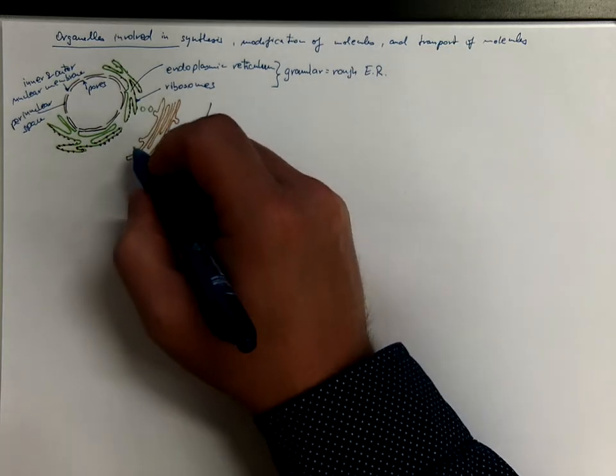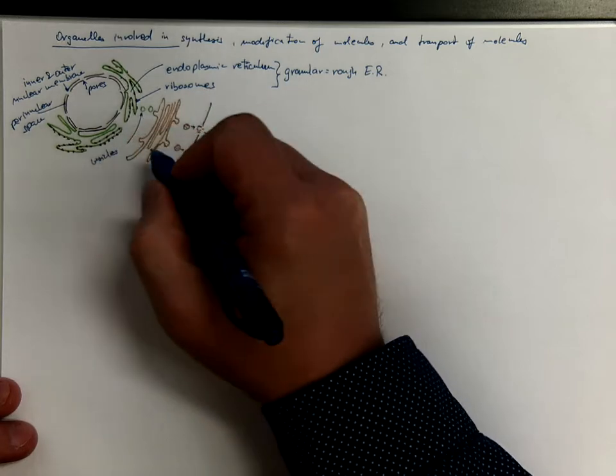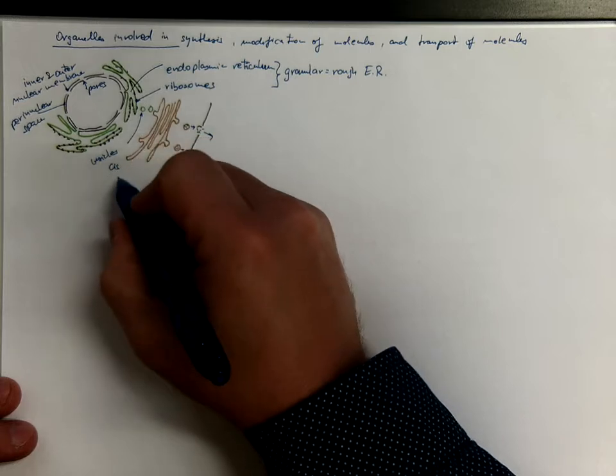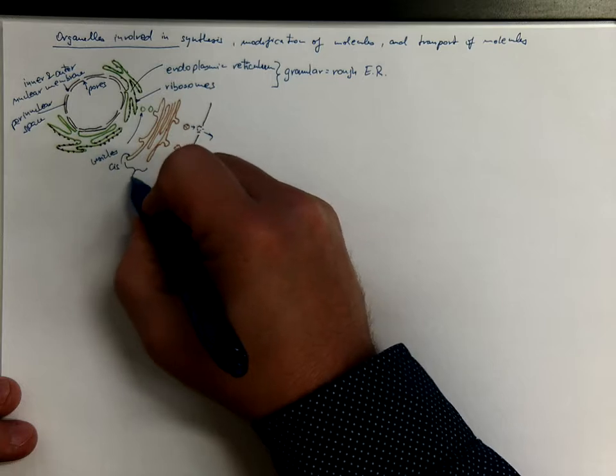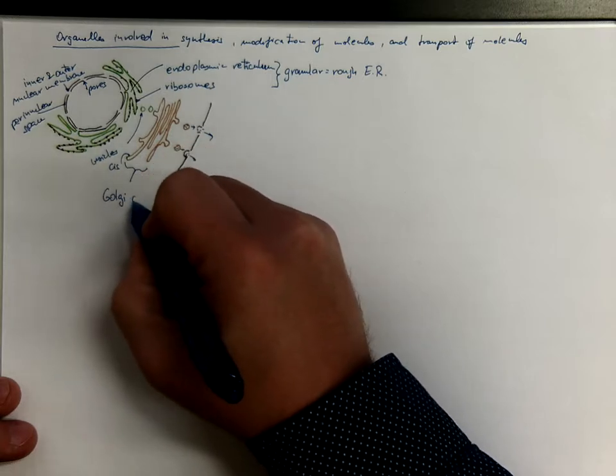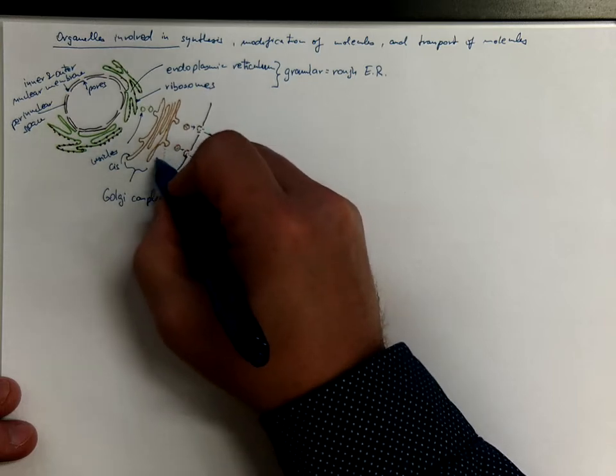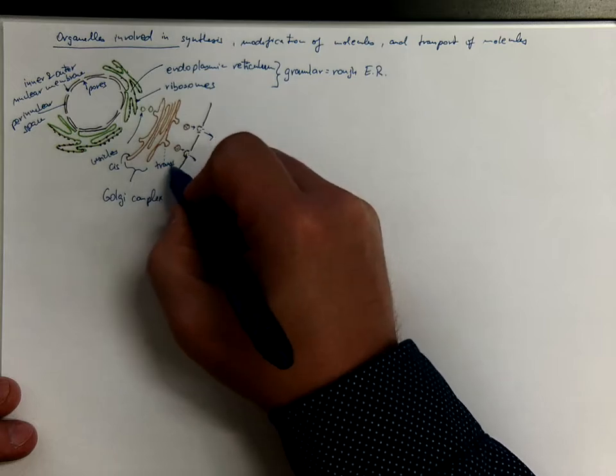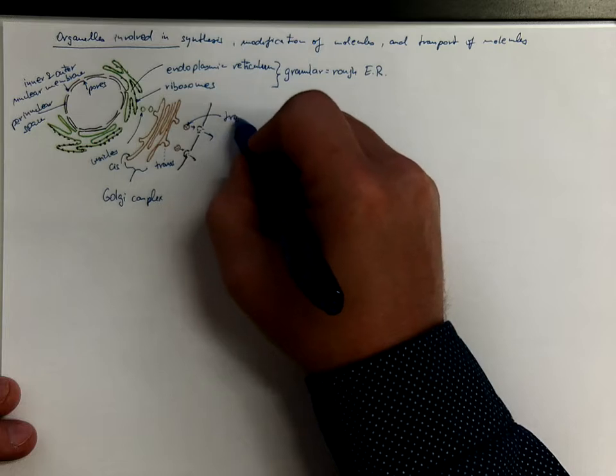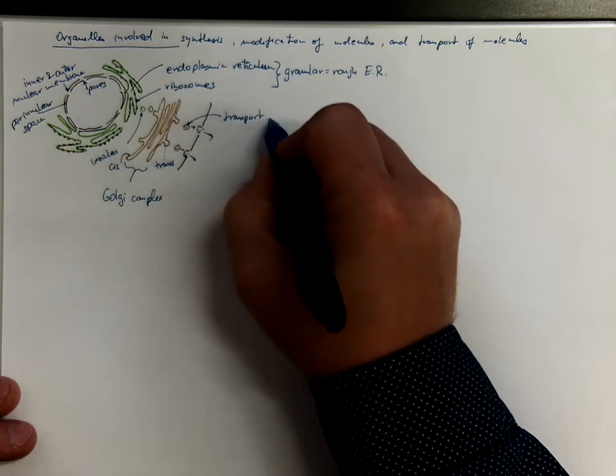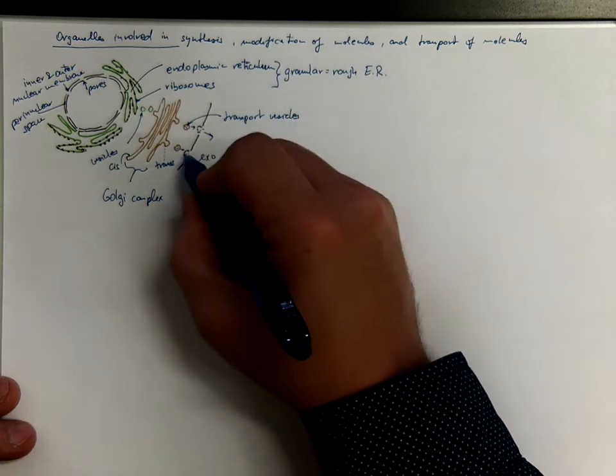which has on its surface ribosomes together that's called granular or rough endoplasmic reticulum. We got transport vesicles adjoining the cis phase of the Golgi complex, while the opposite phase is called trans. And that's where the transport vesicles come from, that eventually undergo exocytosis of their content.